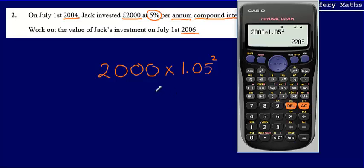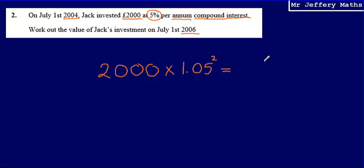That gives me an answer of 2,205. So the value of Jack's investment is going to be £2,205. So final answer, £2,205.